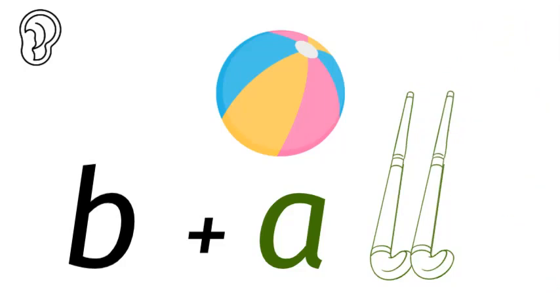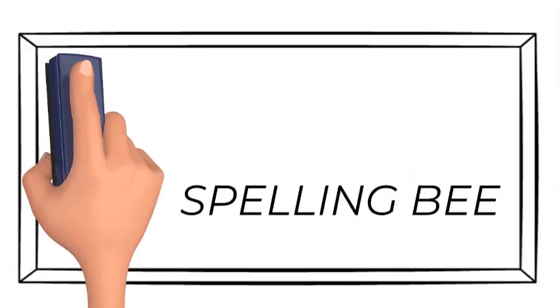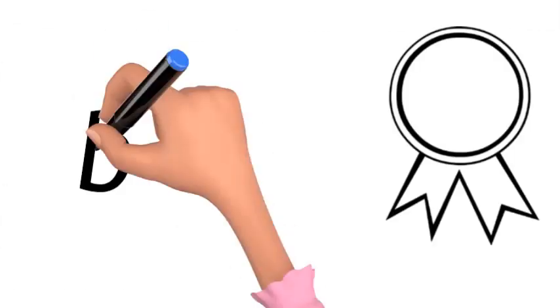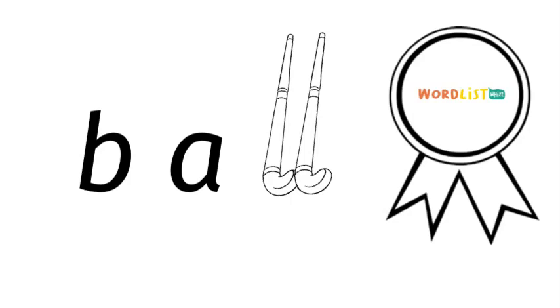B-all, ball. How do you spell ball at the spelling bee? B-a-l-l, b-a-l-l, ball.